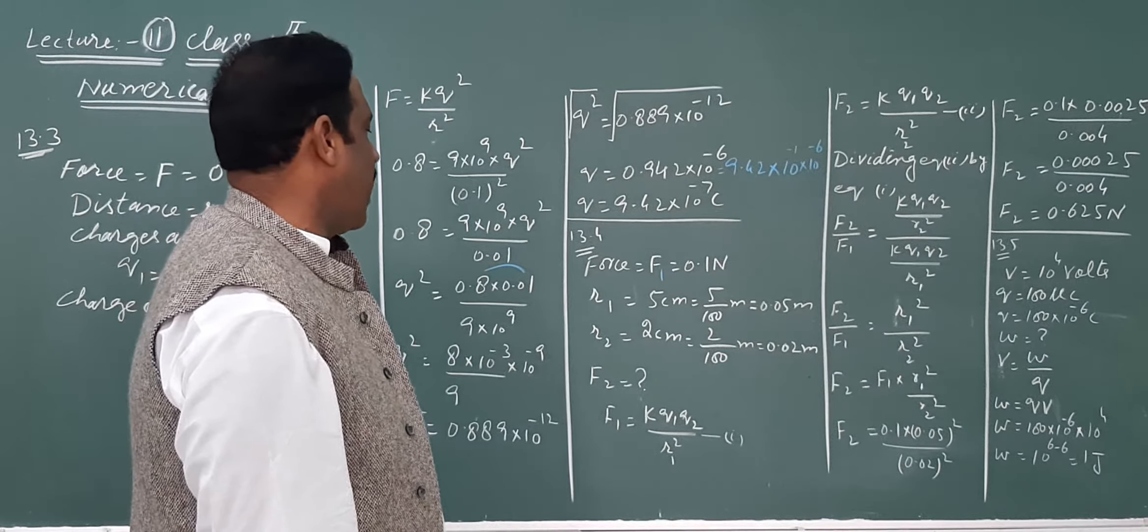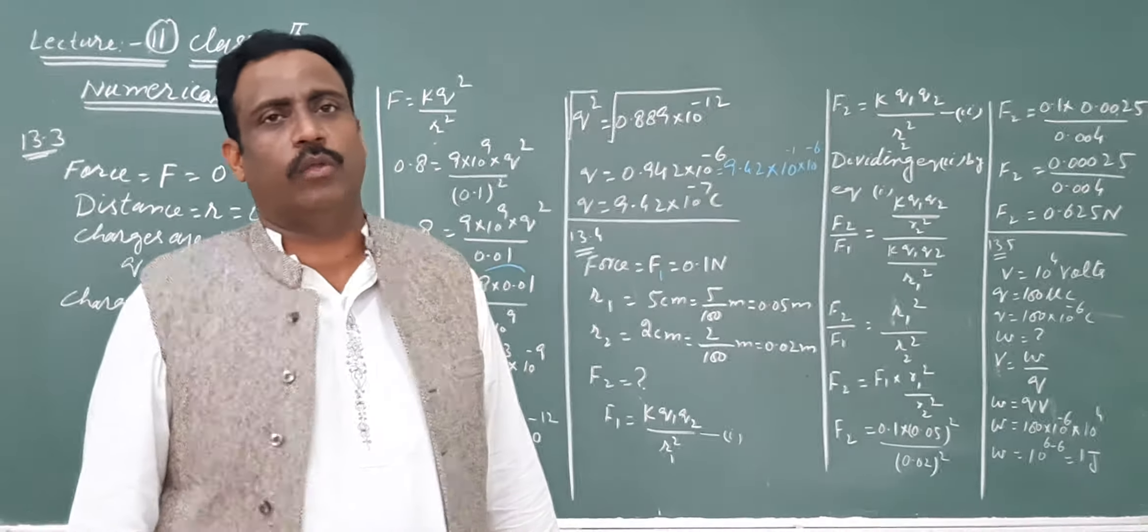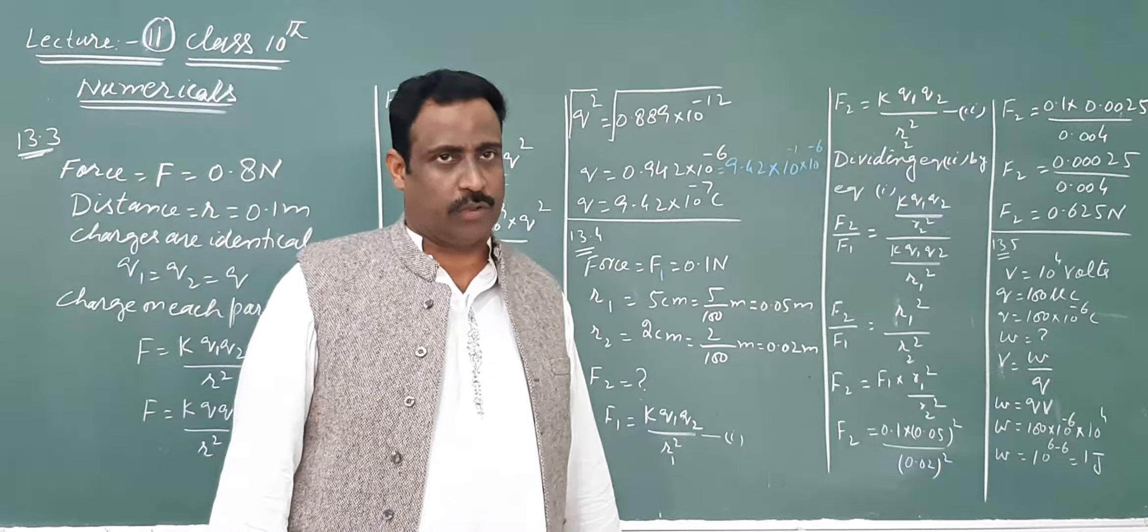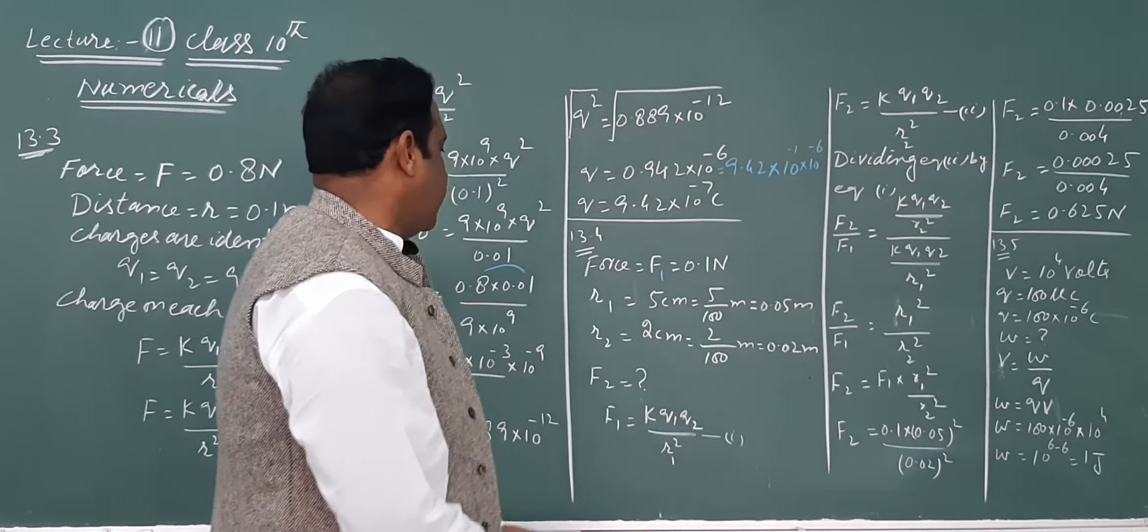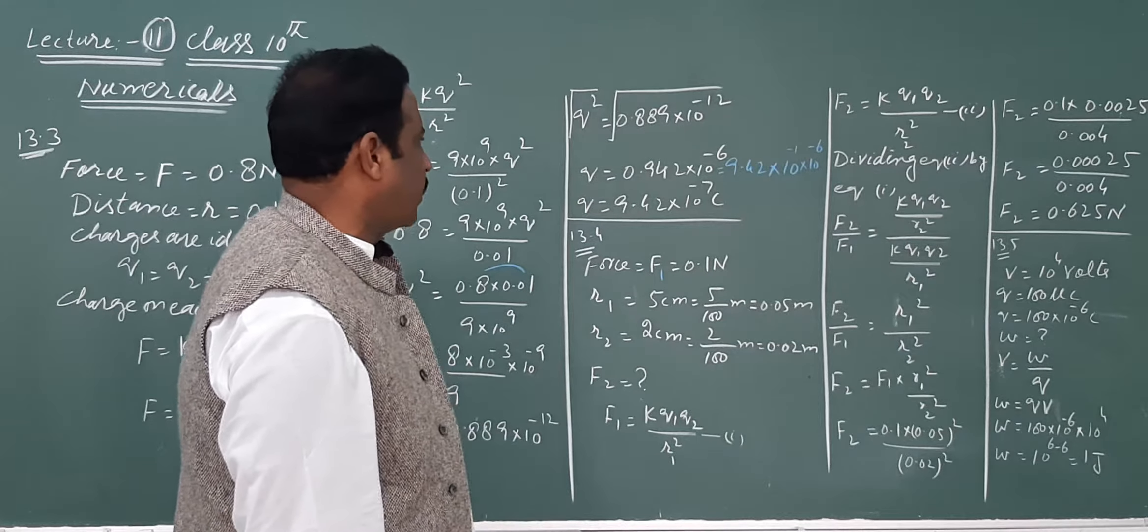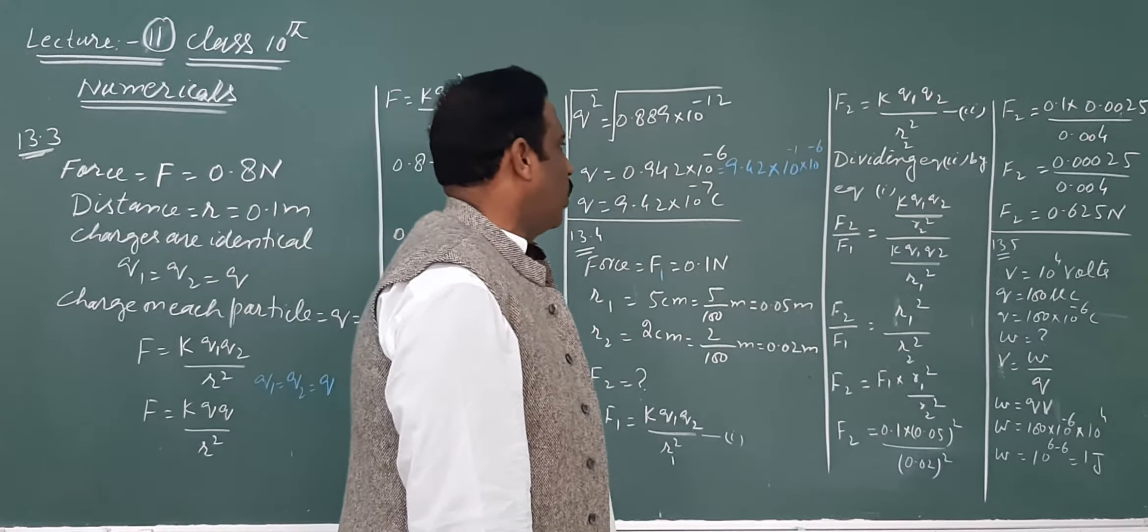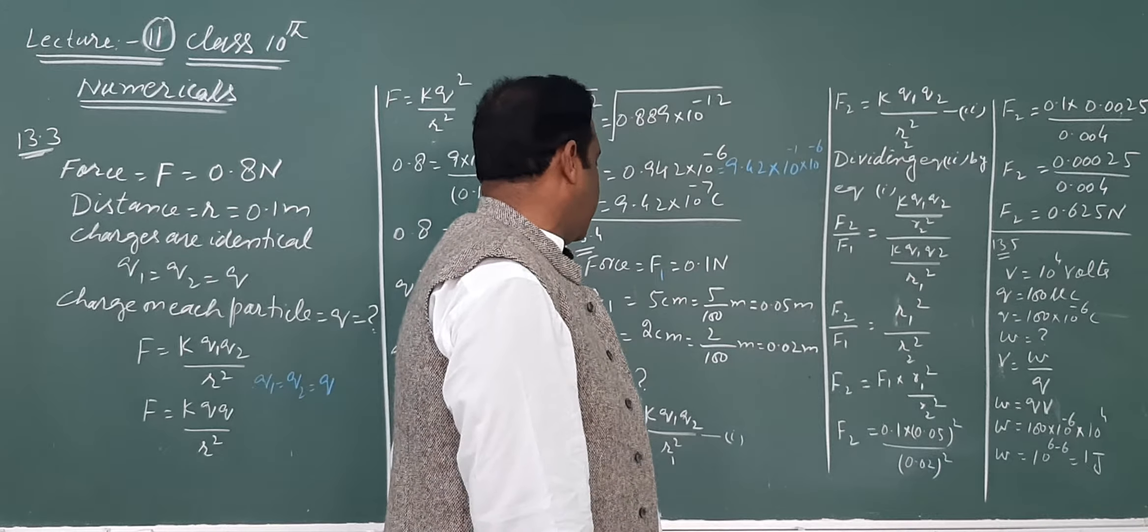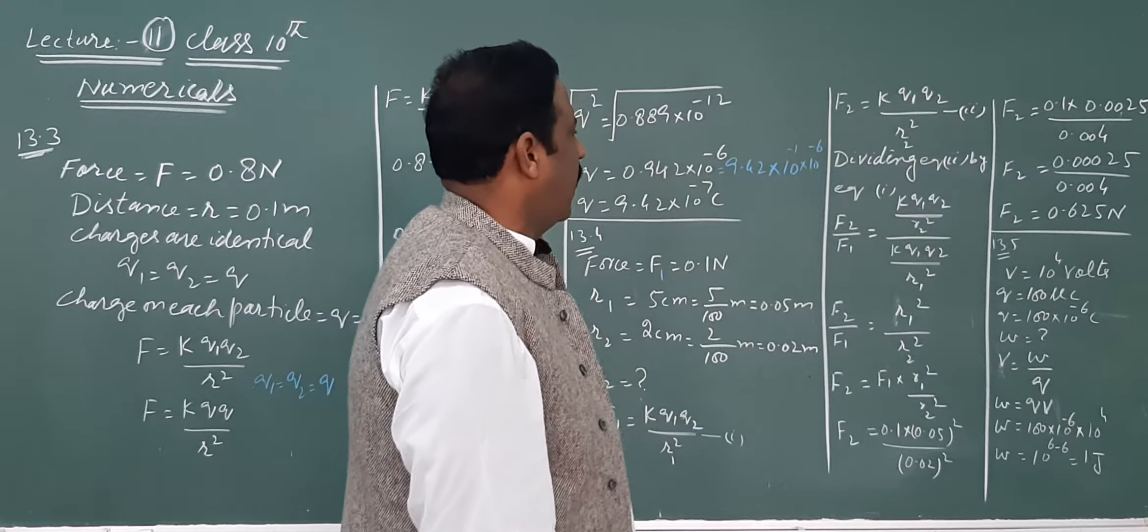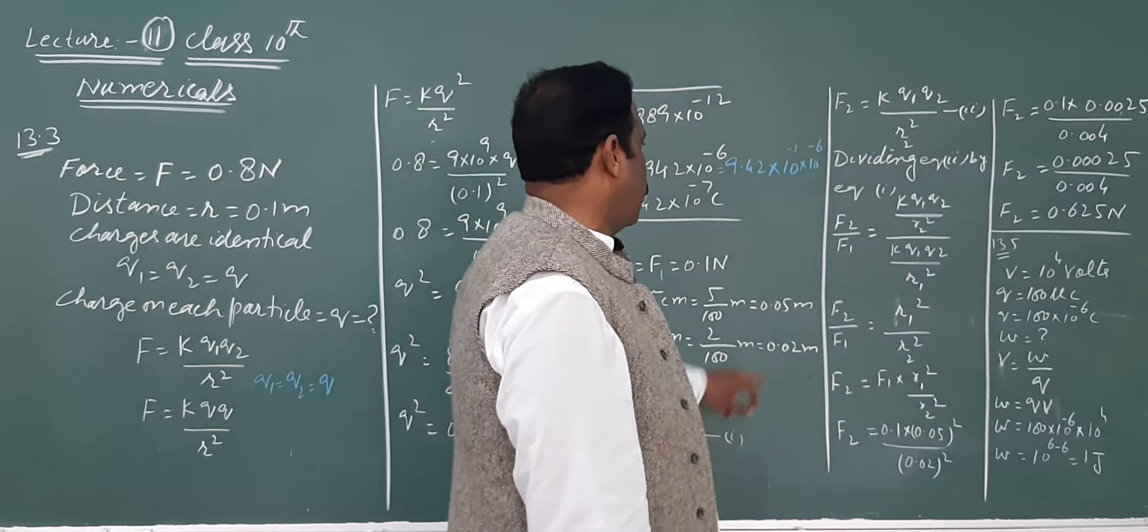Here we have two forces: F1 and F2, and two distances R1 and R2. F1 is 0.1 newton, R1 is 5 centimeter which equals 0.05 meter. Similarly, R2 is 2 centimeter which equals 0.02 meter. We need to find F2.